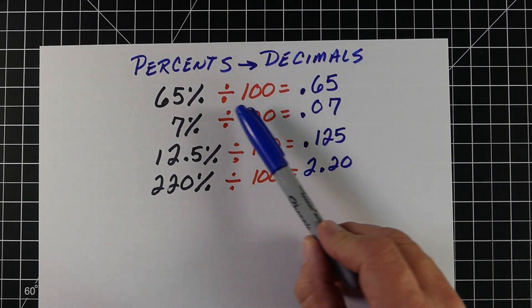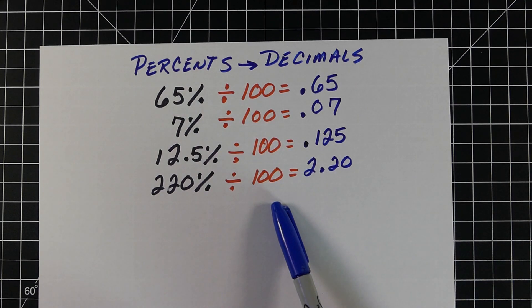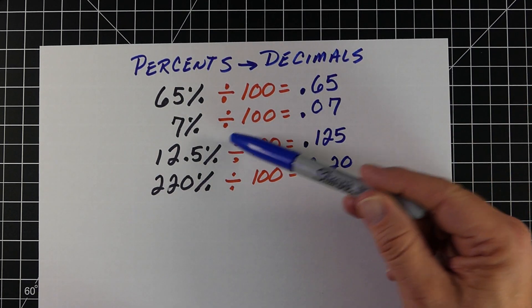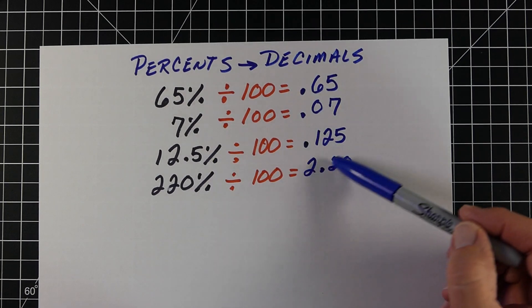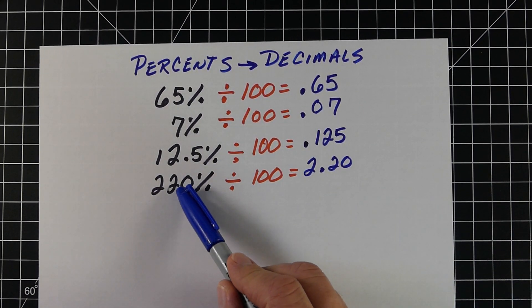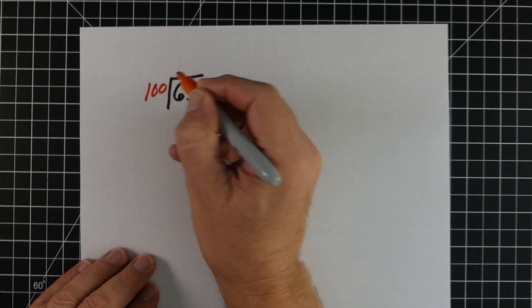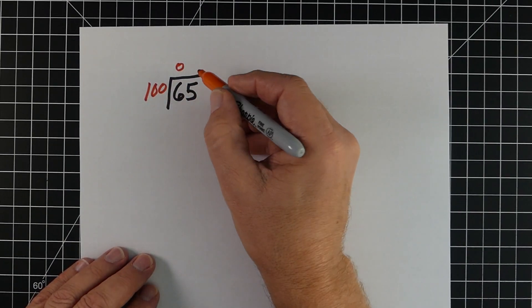Next, we're making percents into decimals. We just do the opposite - we're just going to divide each of our percents by 100. So 65% becomes 0.65, 7% is 0.07, 12.5% is 0.125, and 220% is 2.2.